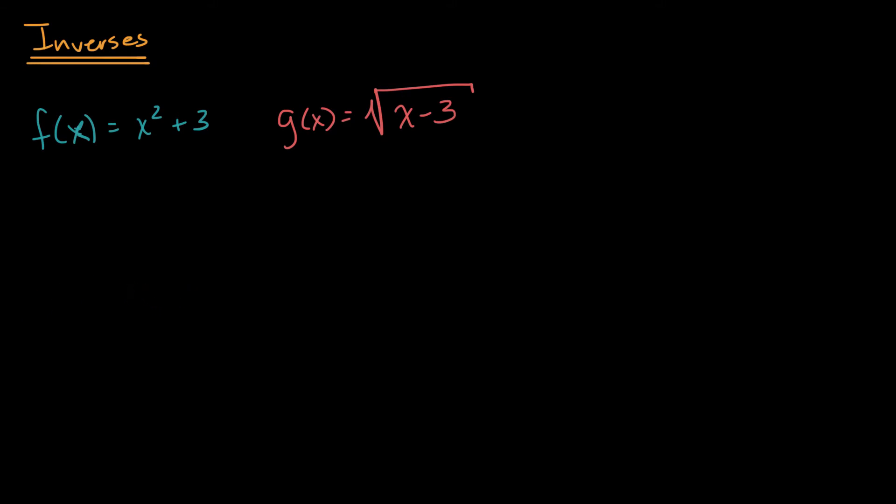All right, now one approach is to try out some values. So for example, let me make a little table here for f. So this is x, and then this would be f of x. And then let me do the same thing for g. So we have x, and then we have g of x.